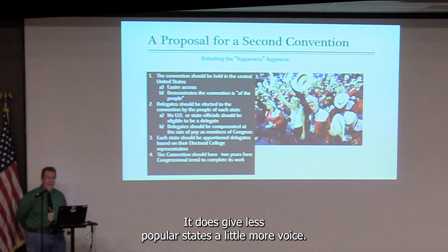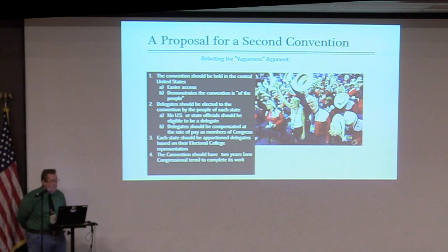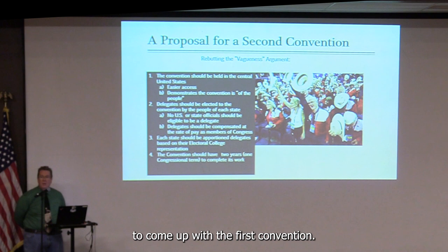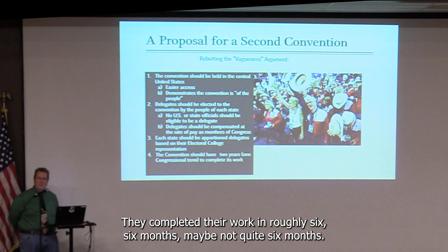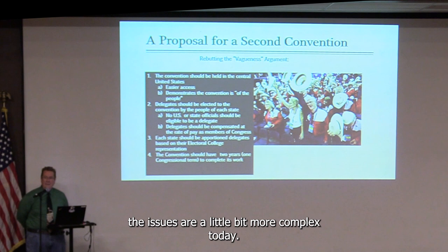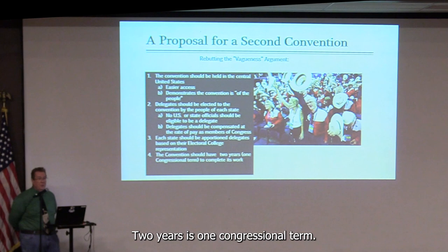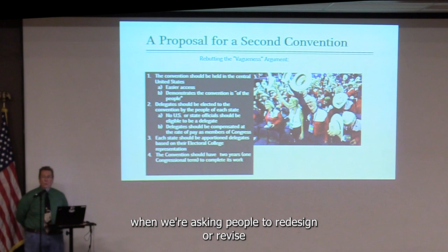I would give the convention about two years to complete its work. The first convention completed their work in roughly four months — May to September of 1787. The issues are more complex today, so they might need more time. Two years is one congressional term, and I think that is reasonable when asking people to redesign or revise our governing document.